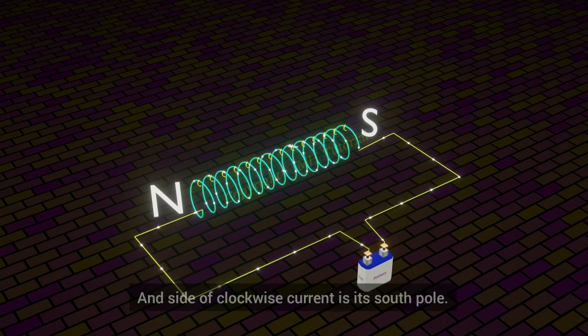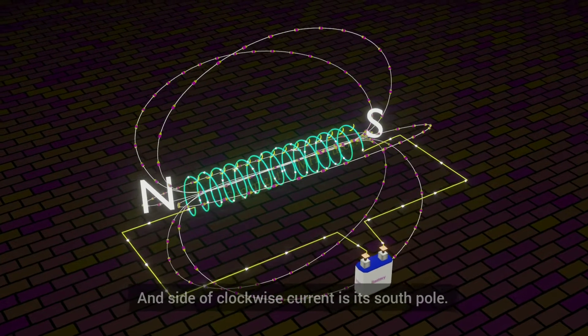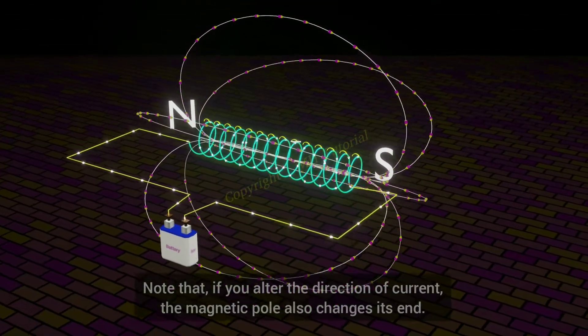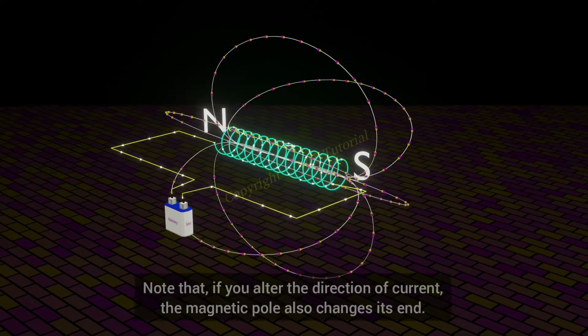And side of clockwise current is its south pole. Note that if you alter the direction of current, the magnetic pole also changes its end.